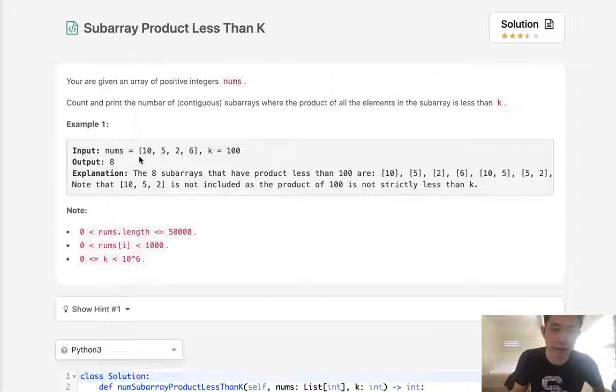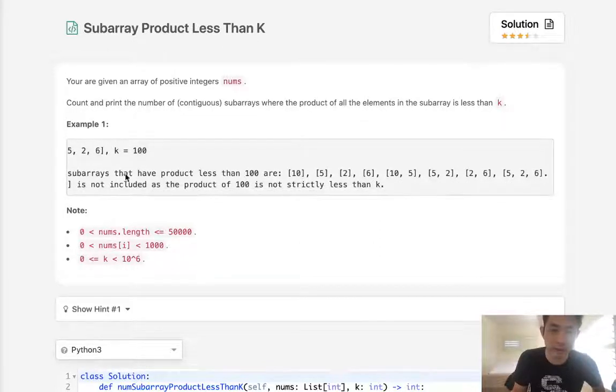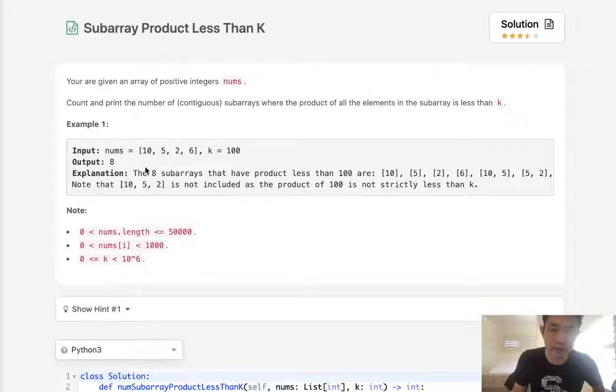If we have an input of [10, 5, 2, 6] and k of 100, we will return 8 because there's going to be 8 subarrays: [10], [5], [2], [6], [10,5], [5,2], [2,6], [5,2,6], and that's going to mean a total of 8.